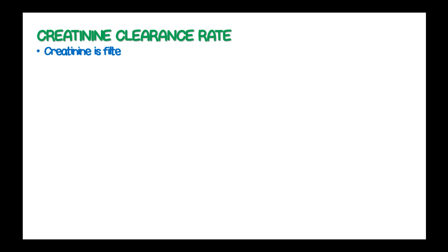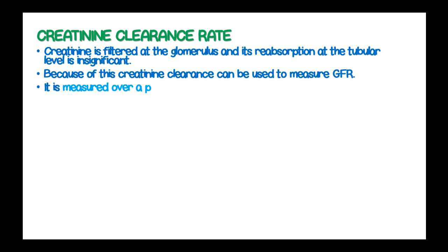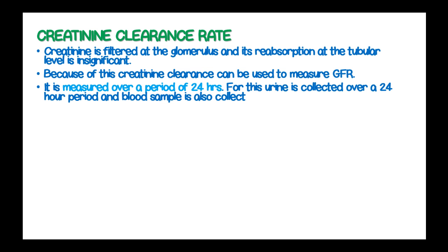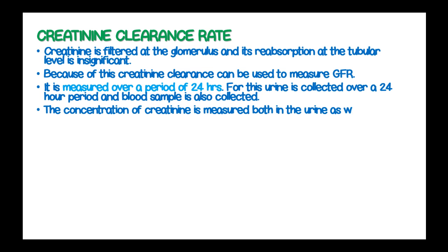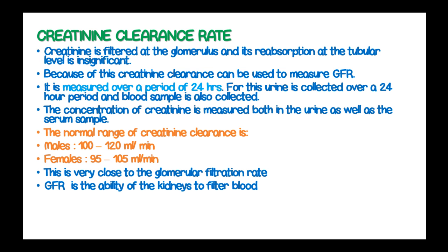Creatinine is filtered at the glomerulus and its tubular reabsorption is insignificant. Because of this, creatinine clearance can be used to measure glomerular filtration rate. It is measured over a period of 24 hours; urine is collected over a 24-hour period and a blood sample is also collected. The concentration of creatinine is then measured in both urine and serum. The normal range is 100 to 120 ml per minute in males and 95 to 105 ml per minute in females. The normal GFR is between 125 ml per minute per 1.73 m² in males and 100 ml per minute in females.